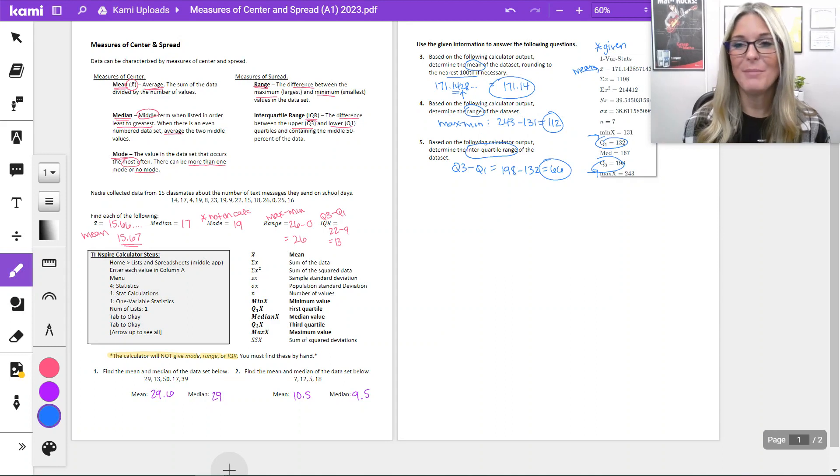So there's our lesson on measures of center and spread, utilizing the calculator to help us find those values. Very helpful when our data set is much larger. But on Delta Math, you're finding the mean and median like we modeled in number one and two. And then you're also reading the calculator output that Delta Math provides to find mean, range, and IQR. Let me know if you have any questions and I'll see you in class.